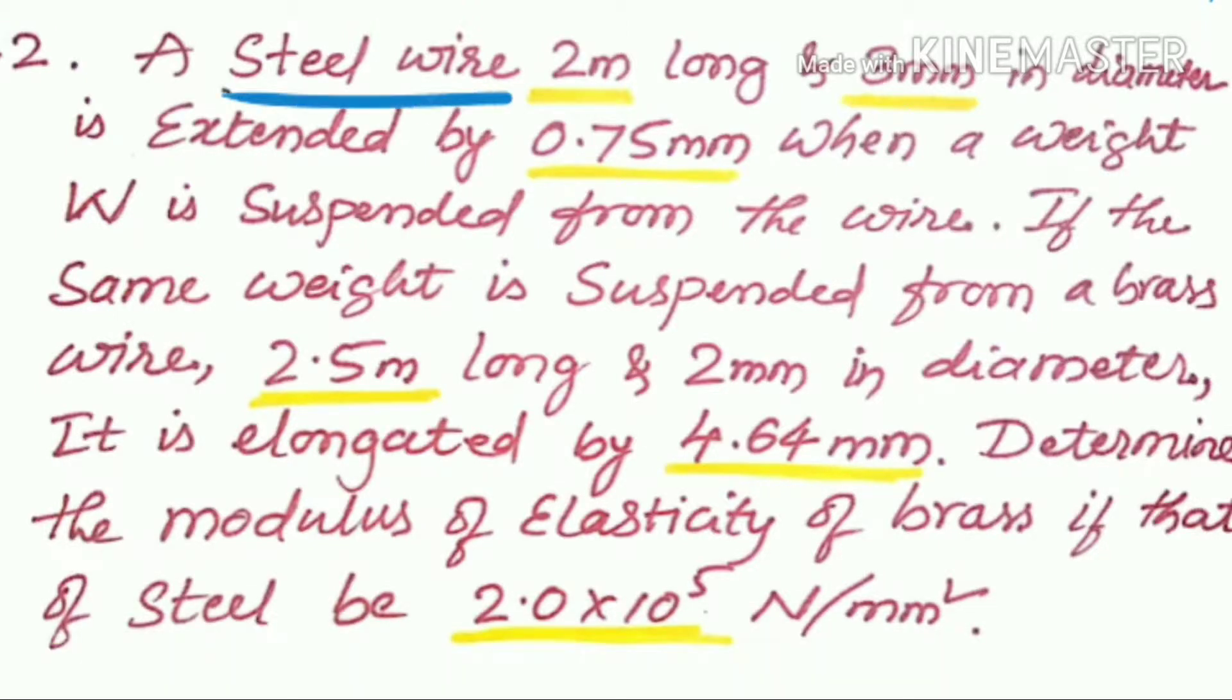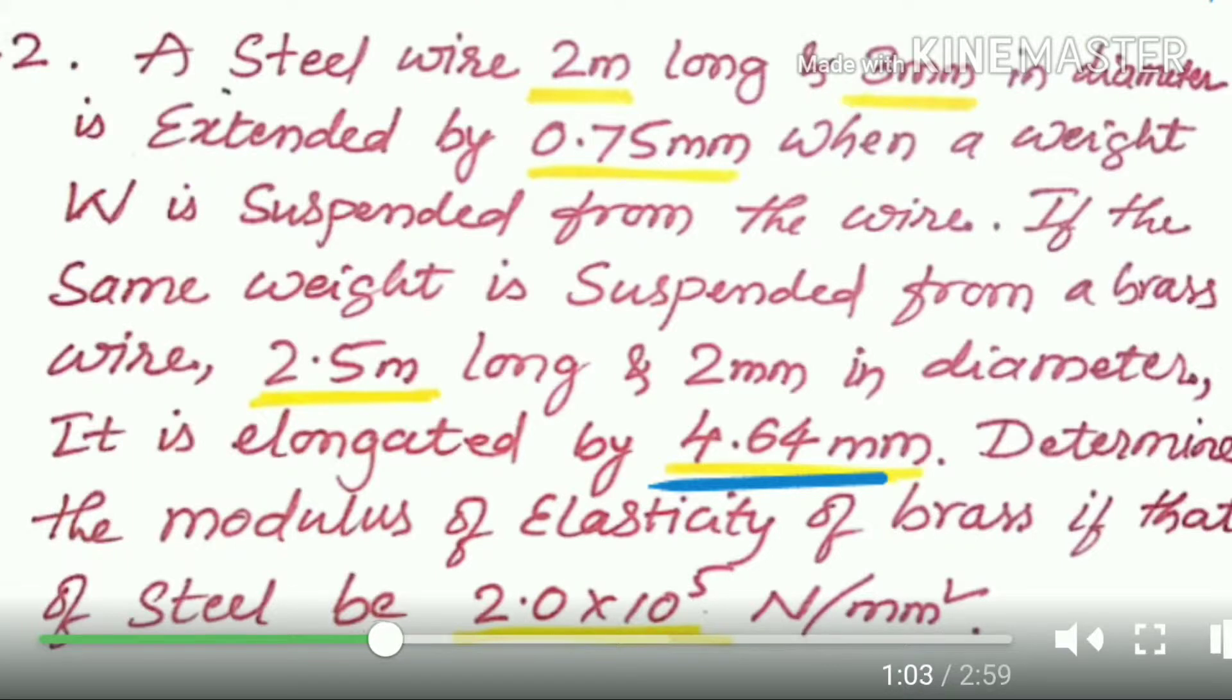One is steel wire, 2 meter long, 3mm diameter, extended by 0.75mm with a load W. And similarly we have another wire made of brass that is 2.5 meter long, 2mm diameter, and it is elongated by 4.64mm.